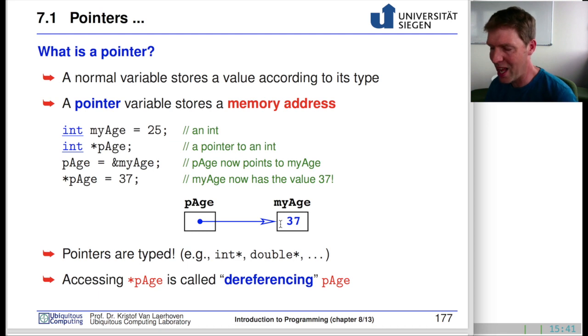We also hold in this cell the type of the thing this is pointing towards, namely that it's an integer. Those two together allow us to think about myAge = 37 as a memory address with a specific set of addresses that this variable is occupying.